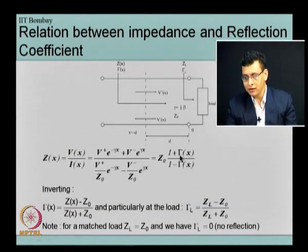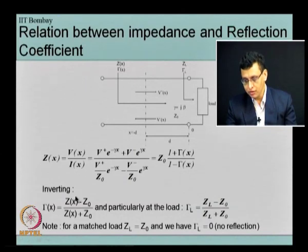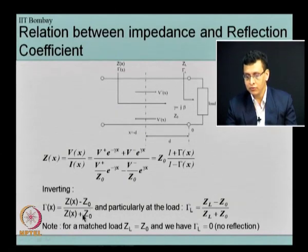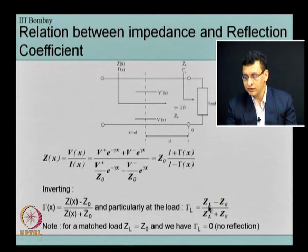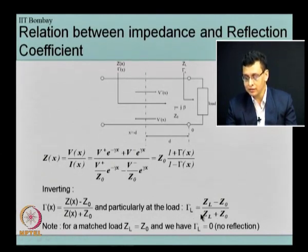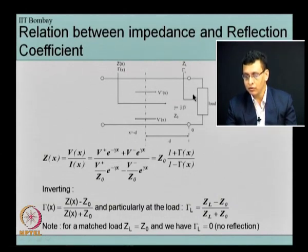From this equation we can find an expression for gamma(x) in terms of Z(x). Gamma at any point is simply equal to (Z(x) − Z0) / (Z(x) + Z0). So gamma at the load end, gamma_L, is equal to (Z_L − Z0) / (Z_L + Z0), where Z_L is the load impedance and Z0 is the characteristic impedance. For gamma_L to be 0 — the matched case — Z_L must equal Z0. In other words, the condition for matching is that the load impedance must match the characteristic impedance of the transmission line.